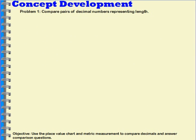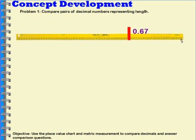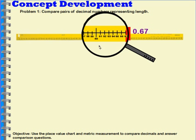For the first one, I have one of our meter sticks, and I've put a piece of tape right at the end here — from here to here we have 0 and 67 hundredths of the meter stick. I'm going to zoom in so you can see that: at one point we have 60, then 61, 62, 63, 64, 65, 66, and here's the line for 67, and that's right where we have our piece of tape.